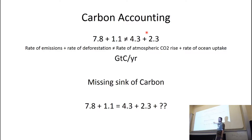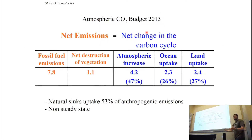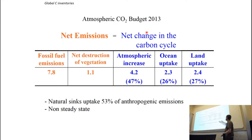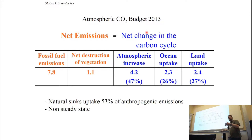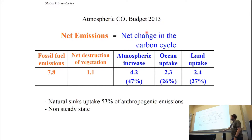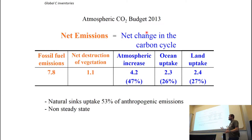The only place for that missing carbon to go is into the terrestrial biosphere. Just by summing up what we know and not making any measurements of the terrestrial biosphere, we've concluded it must be in the terrestrial biosphere. So even though we're chopping down trees, turning them into farmland, and destroying soils — even though every year we make the terrestrial biosphere a bit smaller — it's still accumulating carbon.